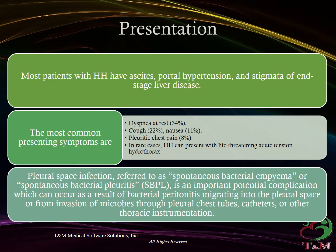Presentation: Most patients with HH have ascites, portal hypertension, and stigmata of end-stage liver disease. The most common presenting symptoms are dyspnea at rest (34%), cough (22%), nausea (11%), and pleuritic chest pain (8%). In rare cases, HH can present with life-threatening acute tension hydrothorax.